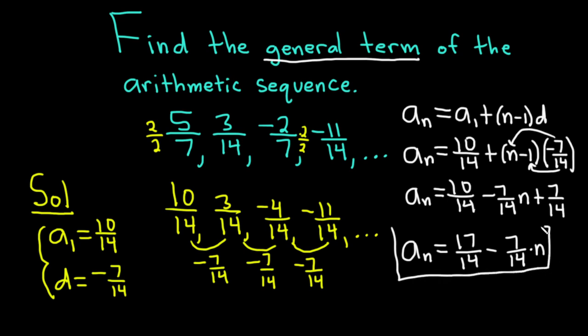So the general term or the nth term of this arithmetic sequence would be a sub n, which is equal to 17 over 14 minus 7 over 14 times n. So a bit messier than a lot of other problems, but hopefully it's been helpful.